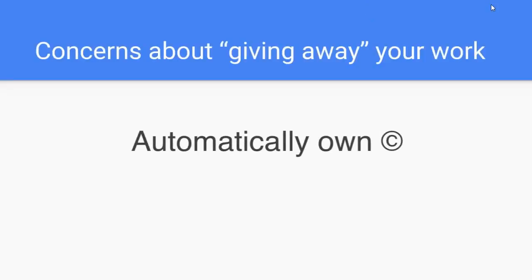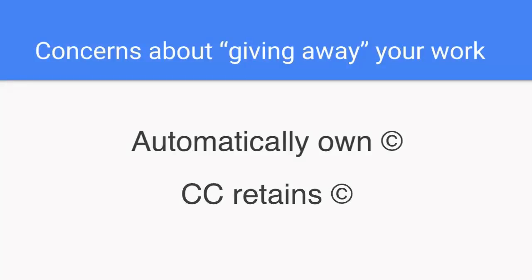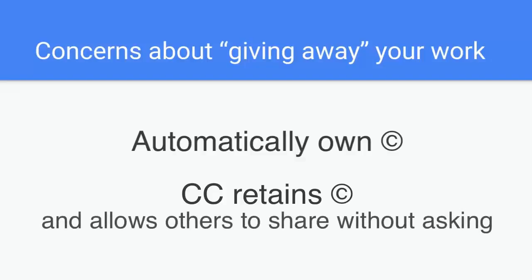You automatically own the copyright to any work that you produce, the moment that you produce it. You don't have to go to the copyright office and submit paperwork. Anything you produce as an author, as a creator — you own the rights to that, including selling it and distributing it. When you put a Creative Commons license onto your work, you still own the copyright and the intellectual property, but you're just preemptively telling other people how they can use your work.